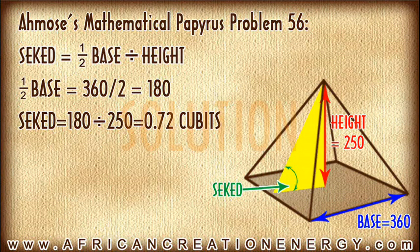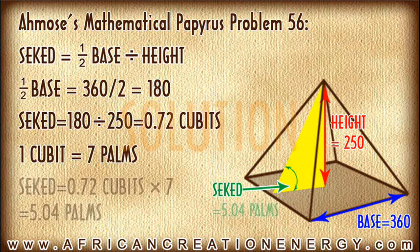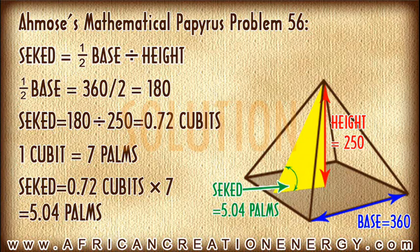Now remember, the Seqed was usually expressed in palms, and 1 cubit was equal to 7 palms. Therefore, if we take the 0.72 cubits and multiply it by 7, we get a Seqed of 5.04 palms as an answer to this problem.